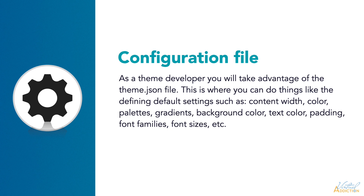With theme.json, theme developers use JSON to define defaults such as content width, color palettes and gradients, background color, text color, padding, font families, and font sizes. You use this file to enable and disable features like gradients or the paragraph drop cap feature. You can also set default values for the styles interface within the editor, and you can create CSS custom properties that are used to style the blocks in the editor and the front of the website.